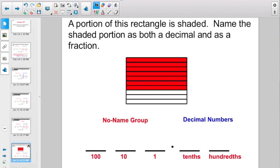Check out this guy. A portion of this rectangle is shaded. Name the shaded portion as both a decimal and as a fraction. Well, the first thing I better figure out is this guy's cut into how many pieces. Let's count. One, two, three, four, five, six, seven, eight, nine, ten separate pieces, right?